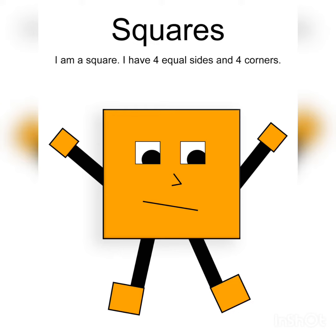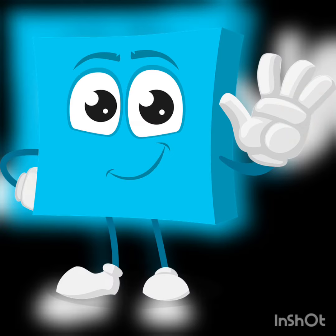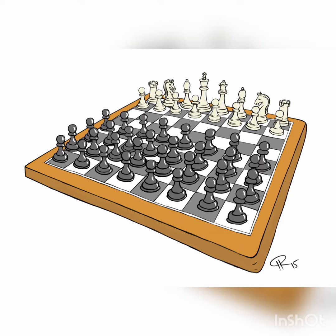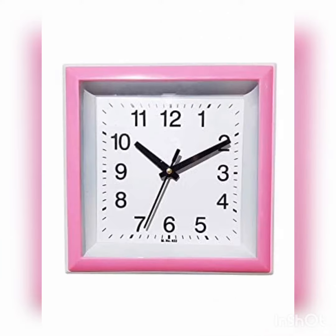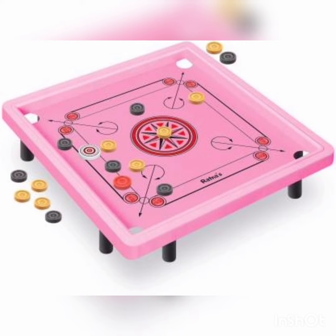The square has four equal sides and it has four equal corners. The objects which have a square shape are chess and clock.